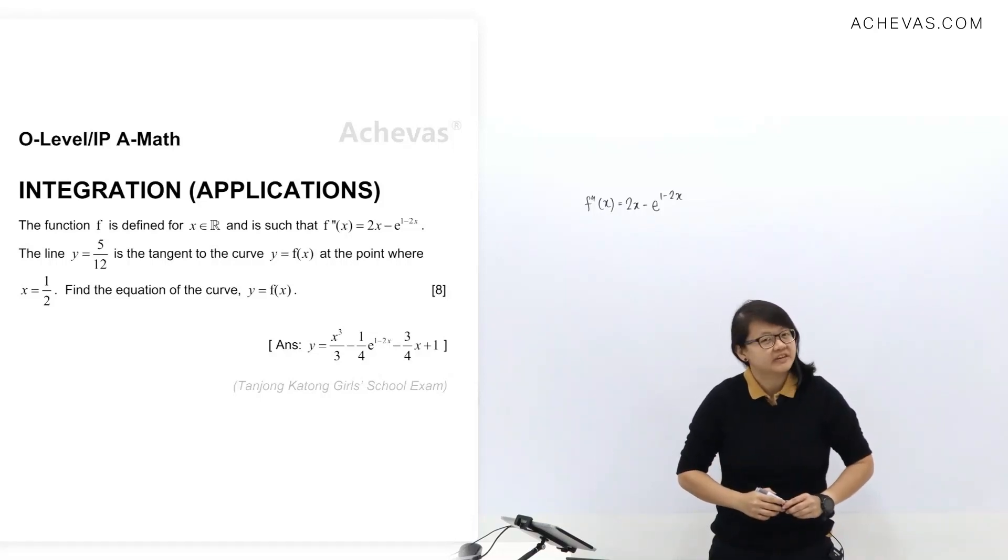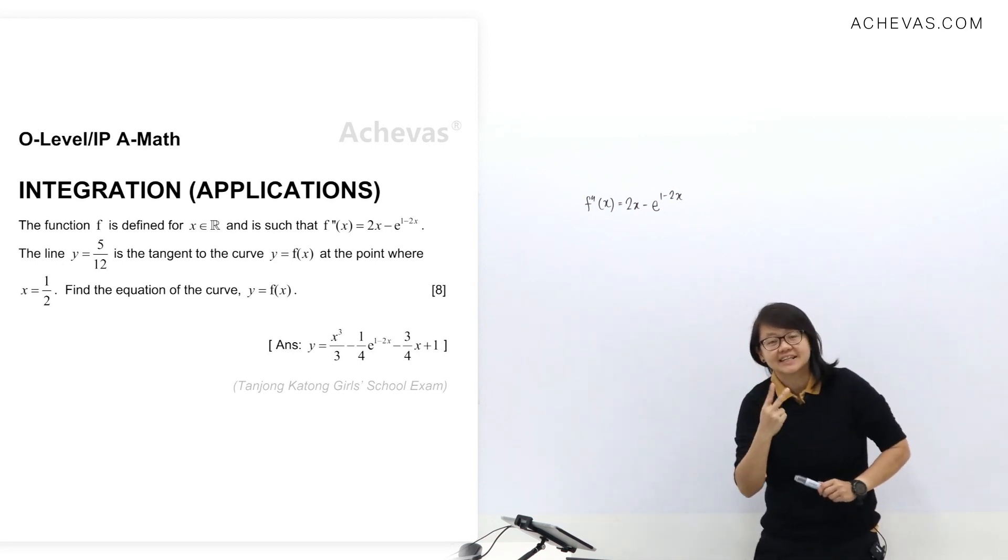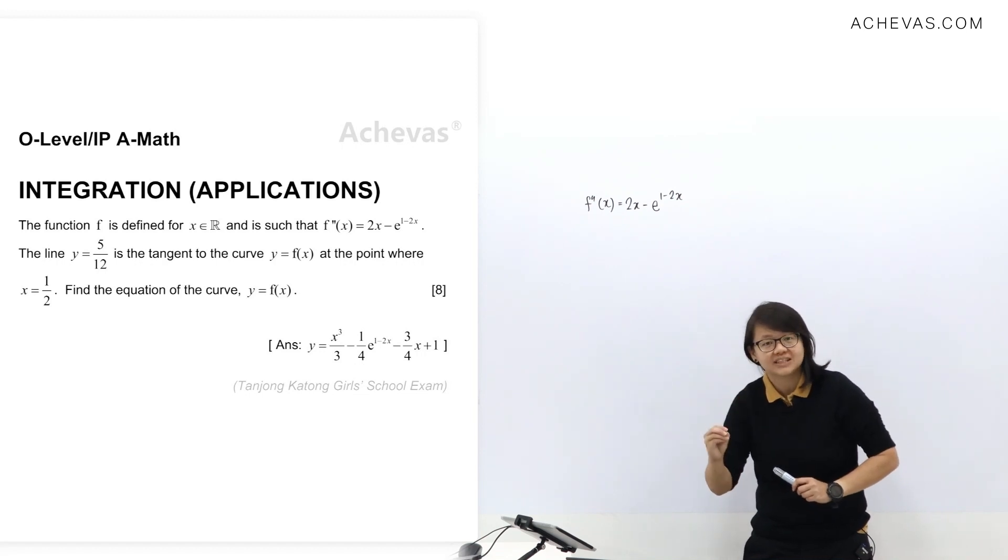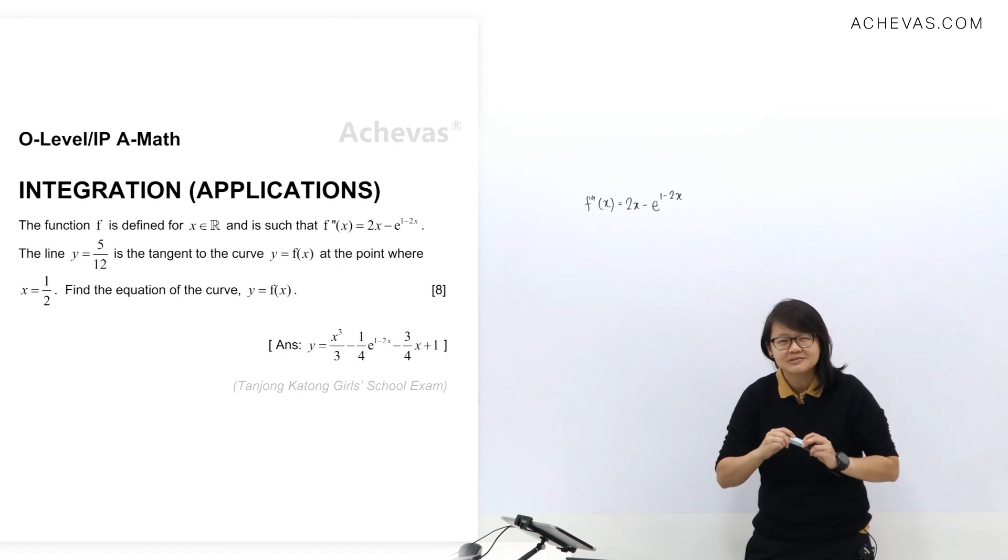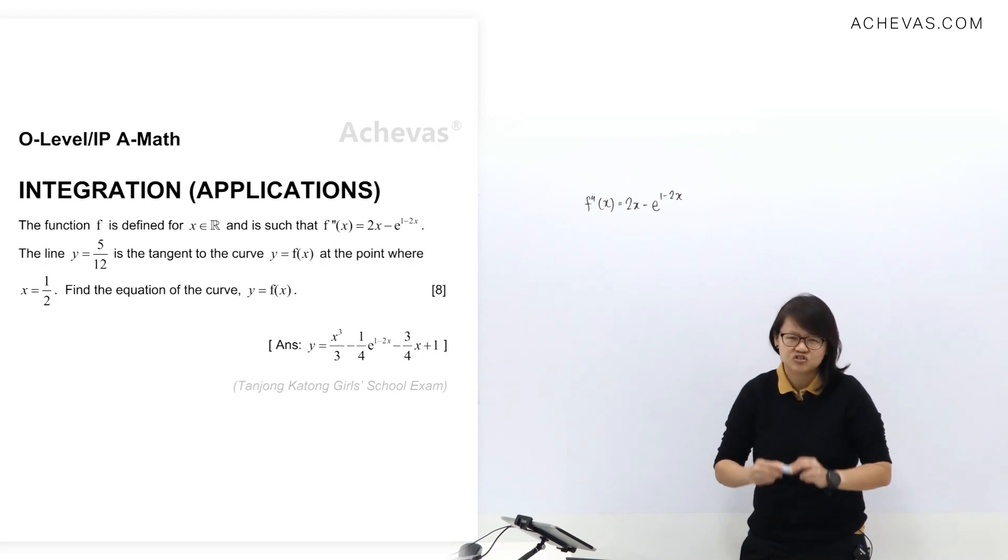Let's take a look at a question on the topic of integration to find the equation of the curve given f''(x), which is the second derivative. So to find the equation of curve y = f(x), you need to do two types of integration, and when you do two types of integration you are going to find two constants.